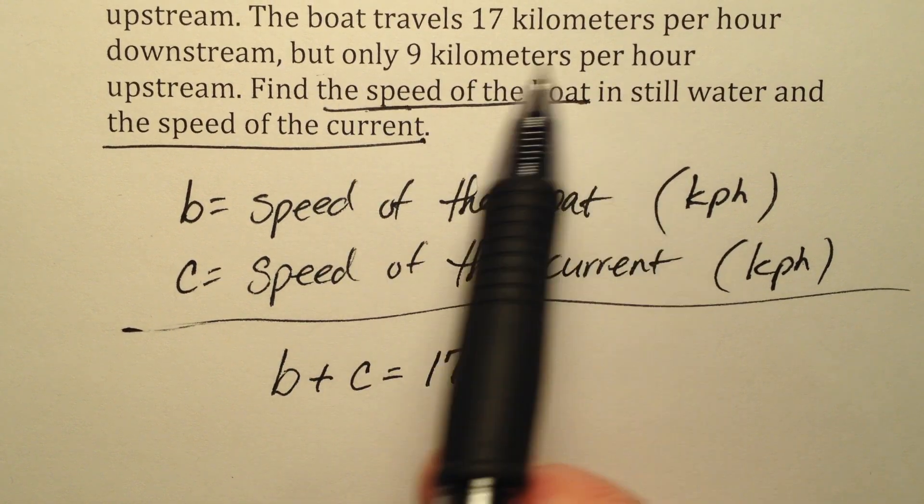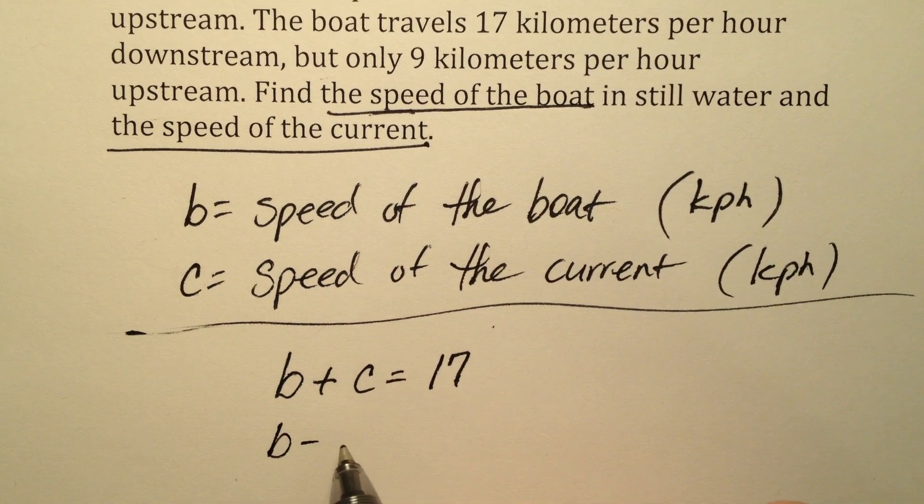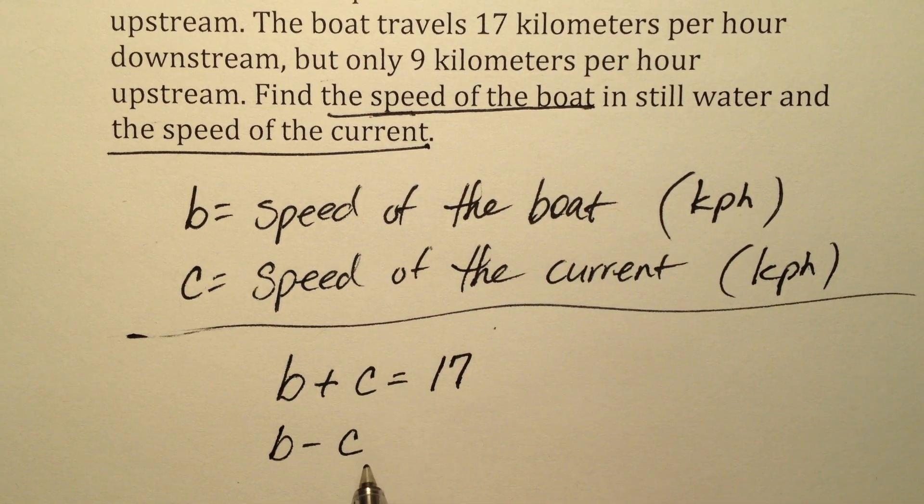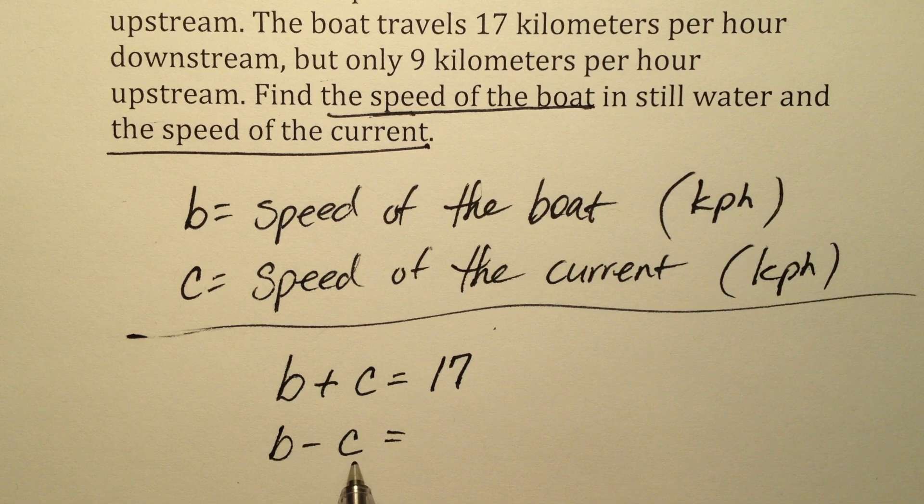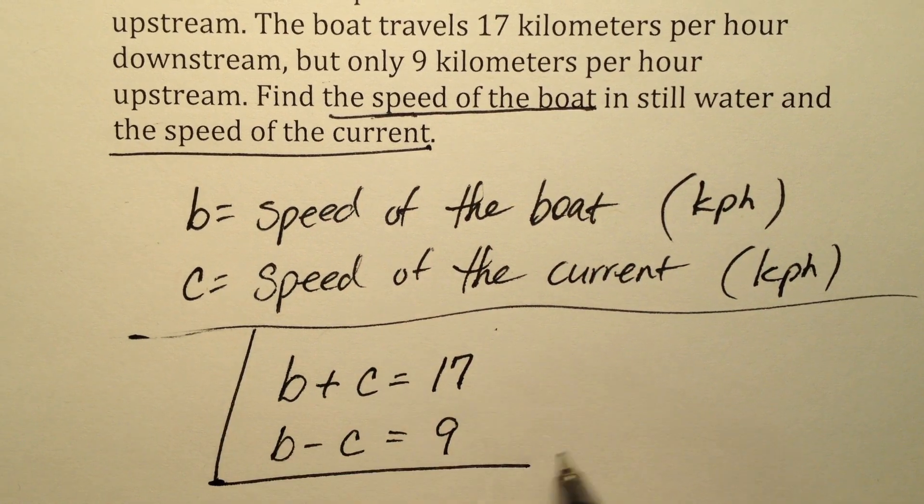But only 9 kilometers per hour upstream. So when you're going upstream, the boat is being fought by the current, or the boat has to fight the current. Because they're going in opposite directions. So whatever the speed of the boat is, we have to subtract the current, and that's going to give us 9 kilometers per hour.